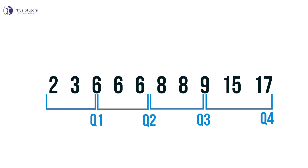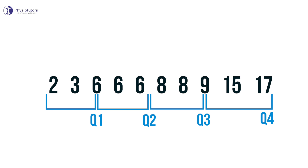The first quartile is the upper border of the lowest 25% of scores, which is 6 in our example. The third quartile displays the upper border of the lowest 75% of all values, which is 9. The interquartile range is found between Q1 (which is 6) and Q3 (which is 9), giving us a range of 3. The vertical bar in the middle of the interquartile range is the median, which is 7 in our example.